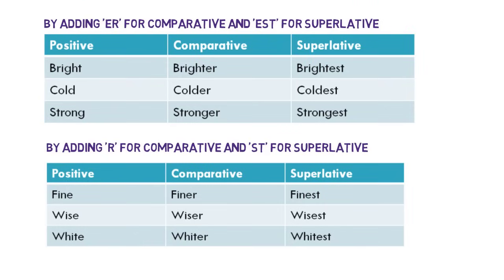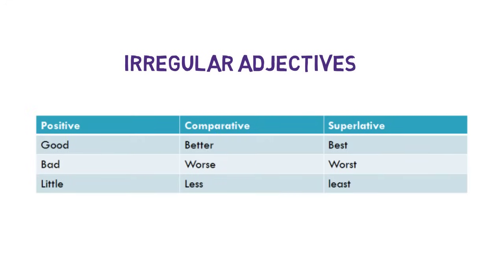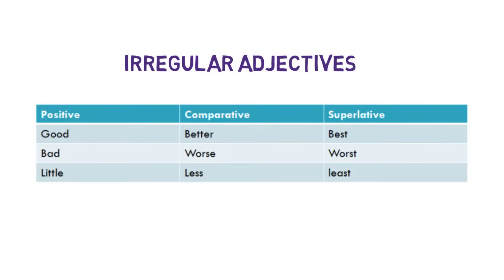There are some adjectives that cannot be converted this way — these are called irregular adjectives. Examples are: Good, Better, Best — Bad, Worse, Worst — and Little, Less, Least. Note these words carefully; they don't follow any pattern that we discussed. Please remember these degrees and these conversion techniques.